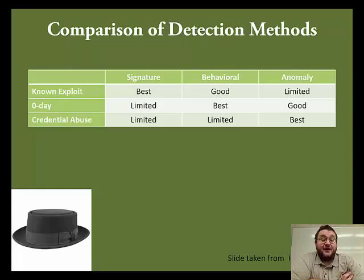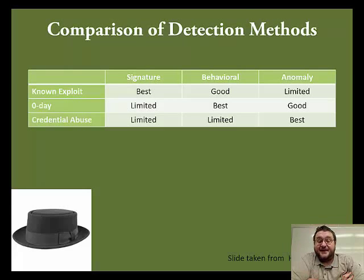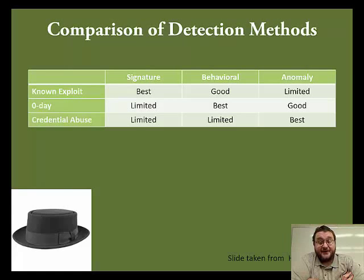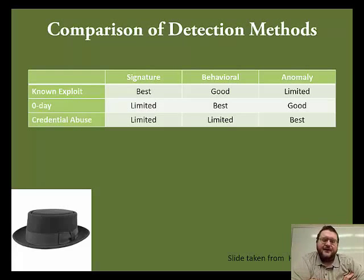This chart, taken from a talk given by Charles Herring of LanCope, sums up the uses of the various types of detection. Signatures work very well for known exploits but don't handle zero-day attacks or credential abuse. Behavioral detectors are good at known exploits and really good at zero-day attacks, but don't do well with credential abuse. Anomaly detectors will work with known exploits but aren't really best suited for that use. They will find zero-day attacks, and the thing they're best at is identifying abused credentials. The best solution incorporates all three approaches.